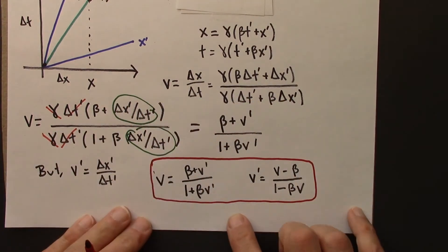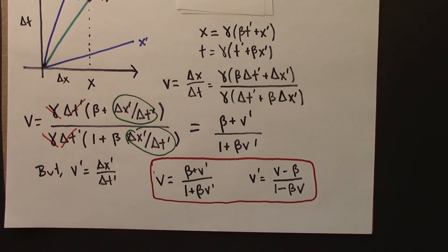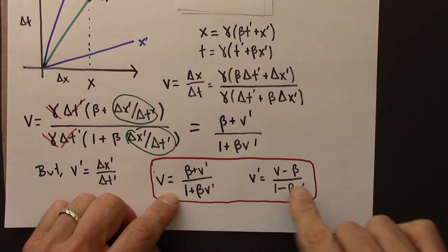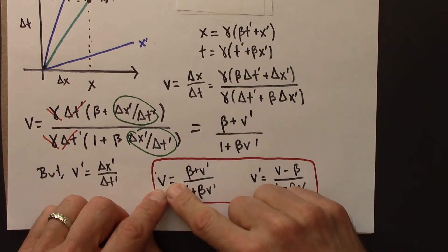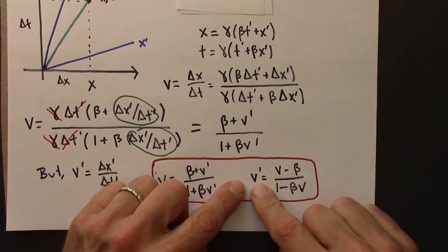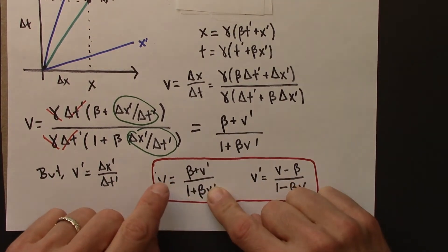They're the relativistic version of the Galilean velocity transformations. And, again, these equations say the same thing. It's just this one I happen to solve for v, this one I happen to solve for v prime. If you know v prime and want to figure out v, use this one. If you know v and want to figure out v prime, use this one.